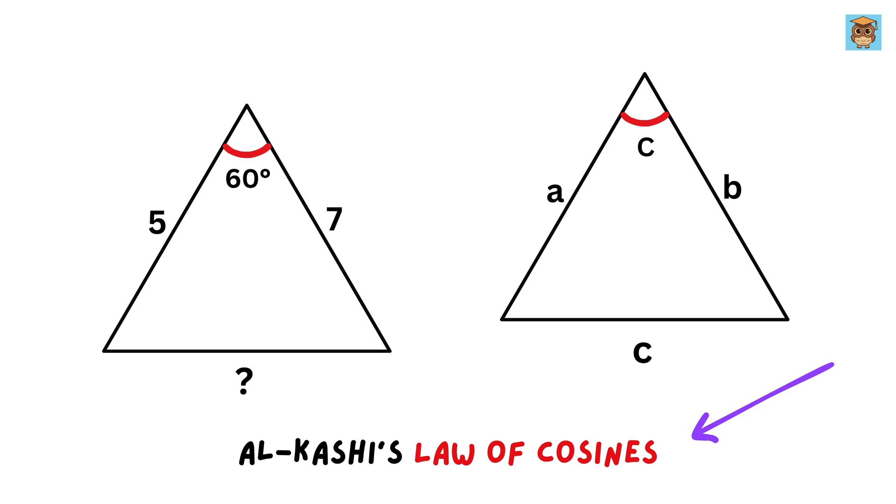It states that side C squared equals the sum of the squares of side A and the square of side B, minus 2 times A times B. And now here comes the important part: this 2AB times the cosine of angle C.